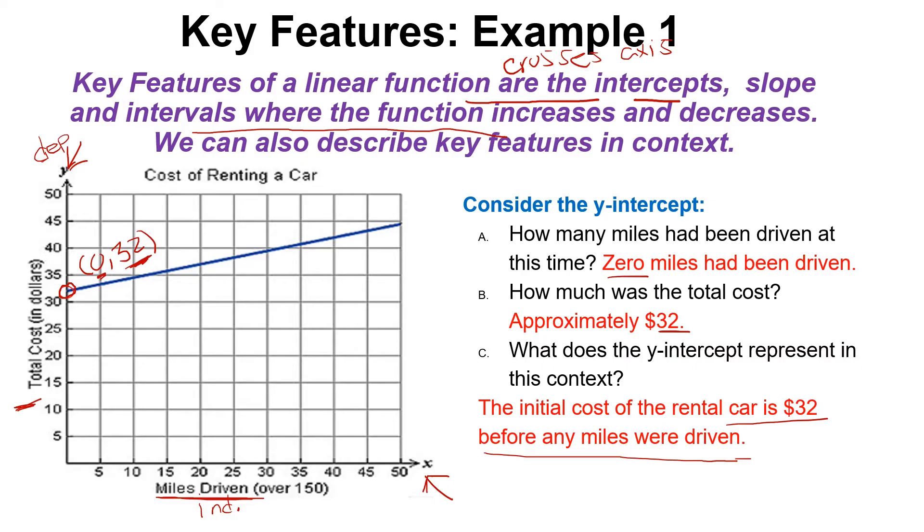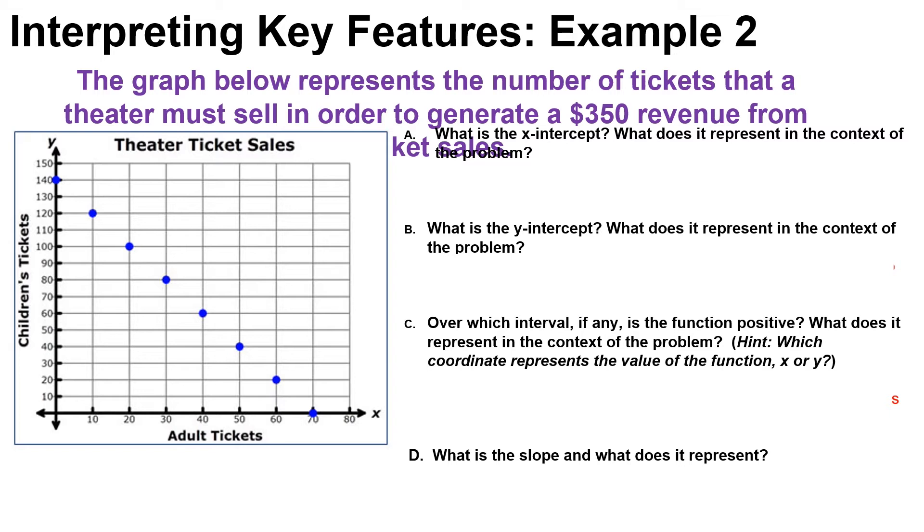Let's take a look at our last example here. It says the graph below represents the number of tickets that a theater must sell in order to generate $350 in revenue from the ticket sales. Keep in mind that we have distinct points here - so no line but we have the distinct points in a line - and so this would be a discrete graph because we have distinct ordered pairs.